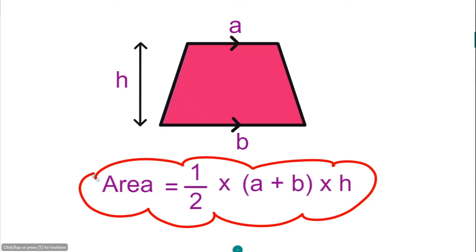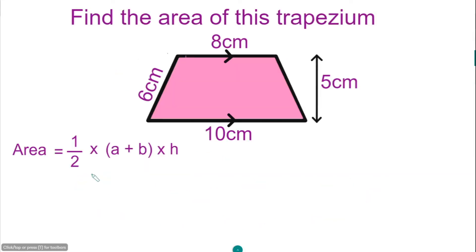Let's solve the first example. We have a trapezium with different dimensions and we've got to find the area. The parallel sides are given as 8 and 10, and the vertical height is 5.